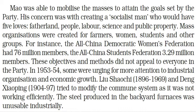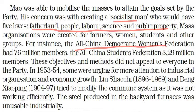Mao was able to mobilize the masses to attain the goals set by the party. His concern was with creating a socialist man who would have five loves: fatherland, people, labor, science, and public property. Mass organizations were created for farmers, women, students, and other groups. For instance, the All-China Democratic Women's Federation had 76 million members, and the All-China Students Federation had 3.29 million members.